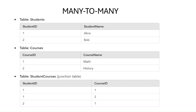In the students table we have Alice and Bob; in the courses table we have Math and History. In the junction table we have student ID and course ID. Alice has enrolled in two courses — Math and History (course IDs one and two) — and Bob has enrolled in only one course, Math. So course ID one has both Alice and Bob enrolled, demonstrating the many-to-many relationship.